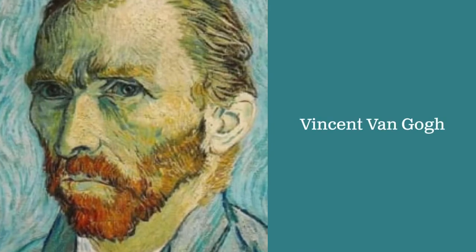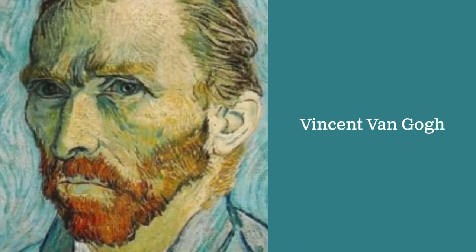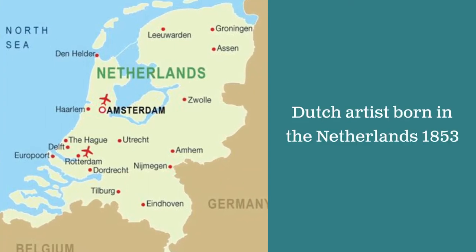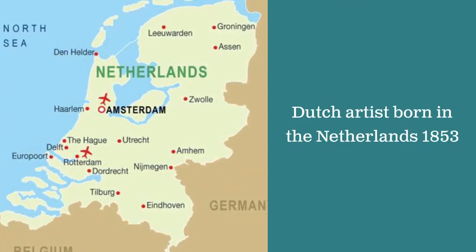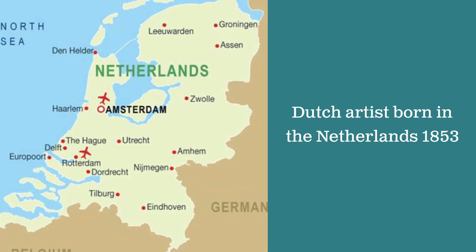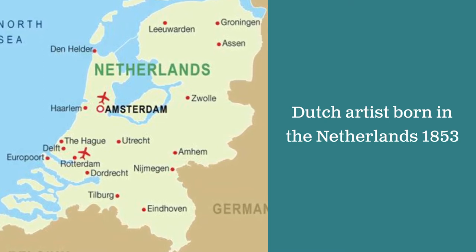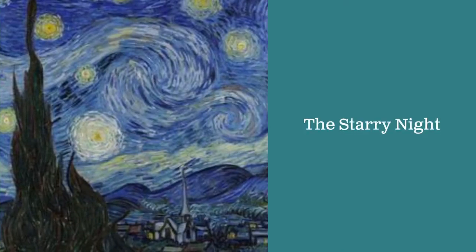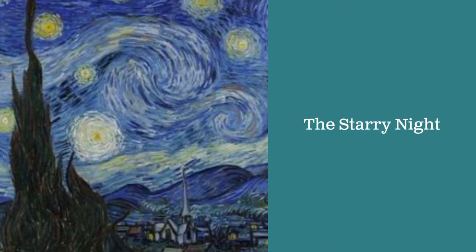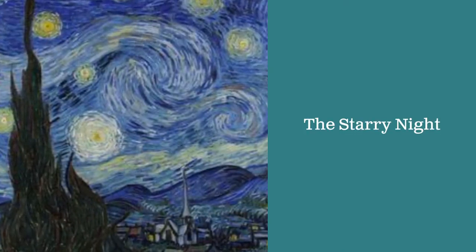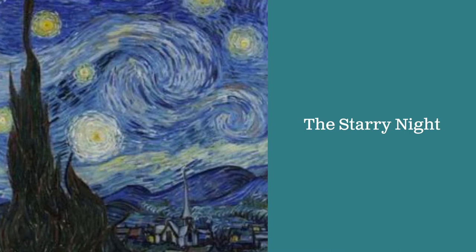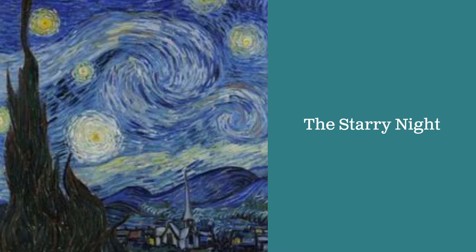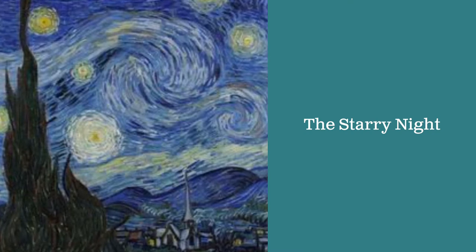This is a self-portrait of the artist Vincent van Gogh. Van Gogh was a Dutch artist — that means he's from the Netherlands. He was born in the Netherlands in 1853. Today van Gogh is one of the world's most famous artists, but when he was alive he wasn't famous at all.